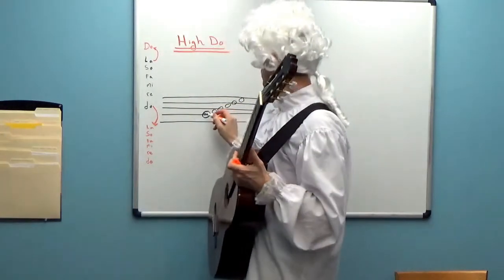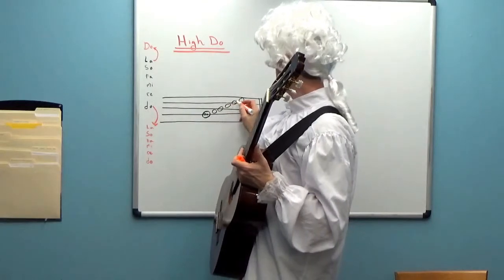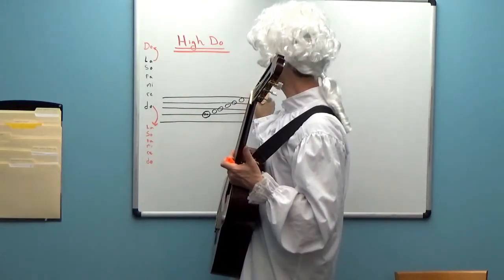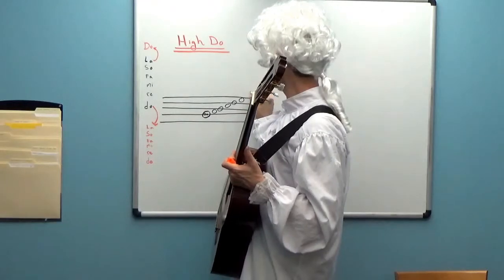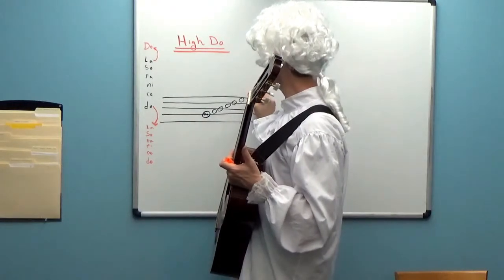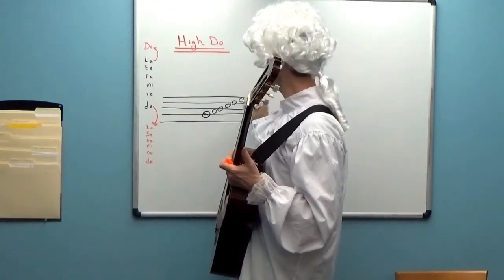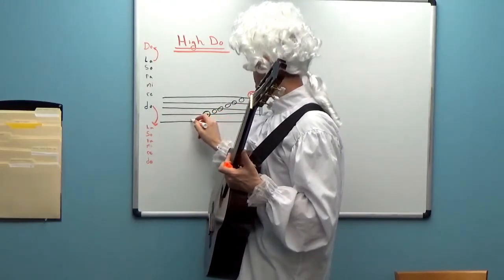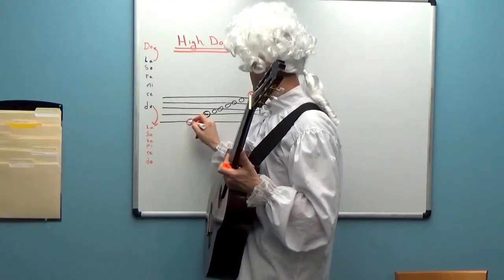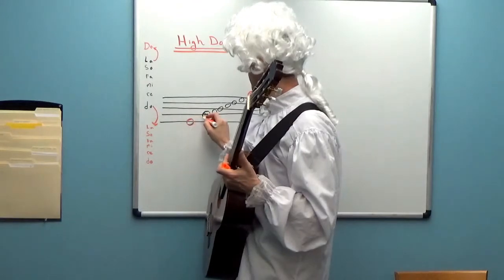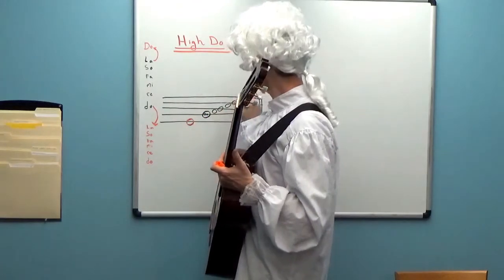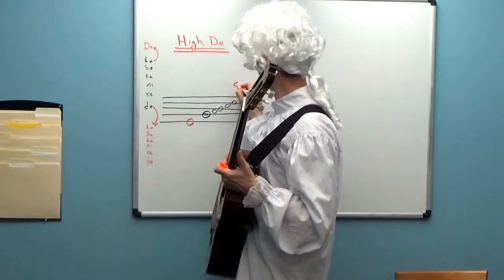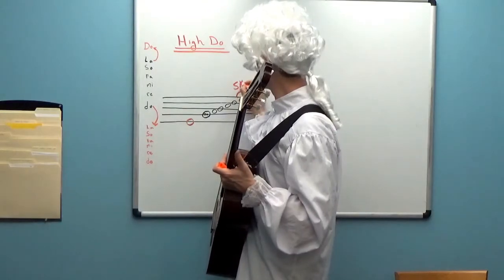So Do, Re, Mi, Fa, Sol, La. If La is in the space, Hi-Do will be in the space above — just as if Do is on the line, Lo-La is on the line below. Because they are both a skip apart. Do to Lo is a skip. Always.